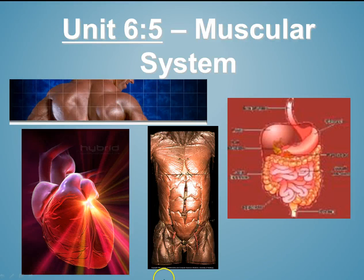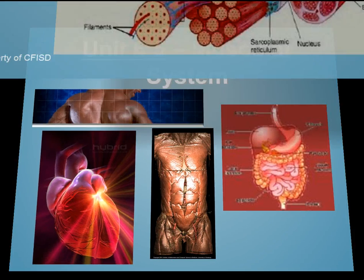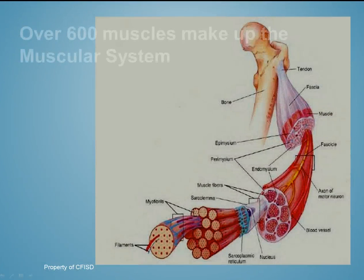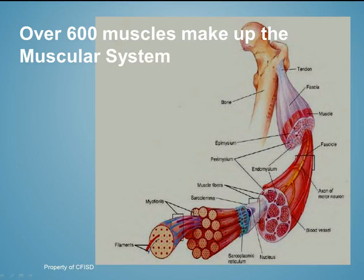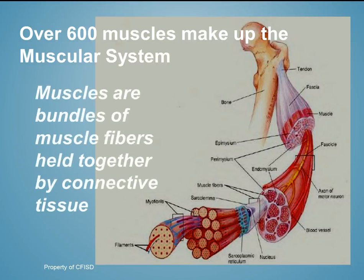Today we're going to talk about the muscular system. In our body there are over 600 muscles that make up the muscular system. Muscles are bundles of muscle fibers held together by connective tissue.